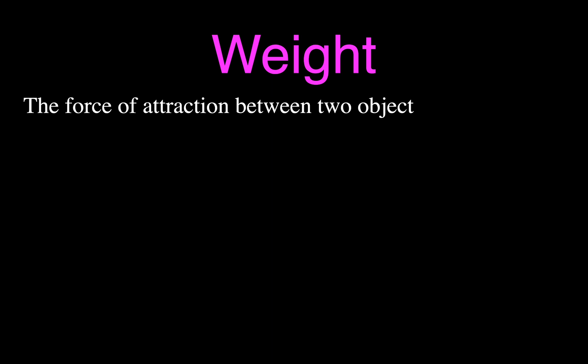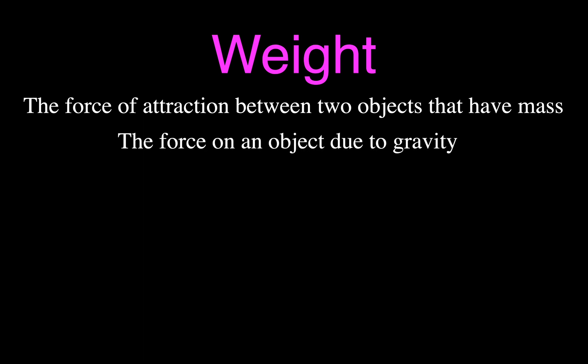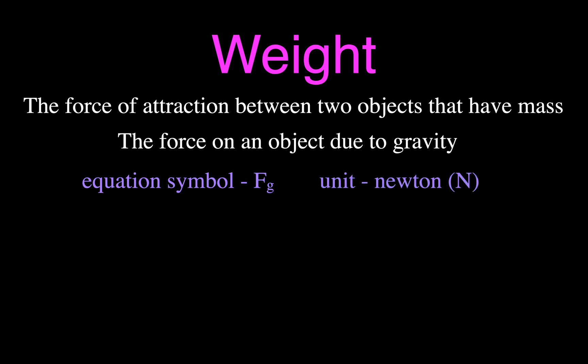When we calculate your weight, the weight is the force of attraction between two objects that have mass. In order to have weight, you have to be on Earth, because it's the force on an object due to gravity — the force of attraction between two objects. You have weight because you're on Earth, and the Earth is pulling down on you. The equation symbol — sometimes people put a W, but I like to put FG, which is the force due to gravity. The unit is the Newton, named after Sir Isaac Newton, abbreviated with a capital N. For example, the weight of something is 15 Newtons, or 0.75 Newtons.